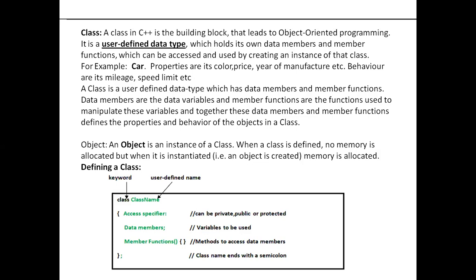Another example: car. If you treat 'car' as a class, the properties are color of the car, price of the car, year of manufacturing, petrol capacity in the tank. The functions or operations — the behavior — are what mileage the car can give and what is the speed limit. So in a real life example of a class, it has properties and behavior; behavior, function, and operation are the same.